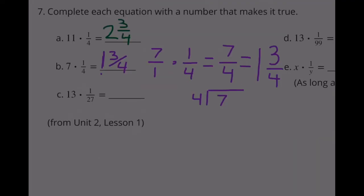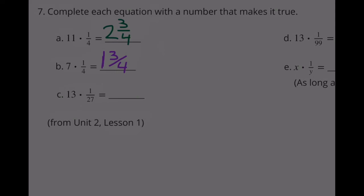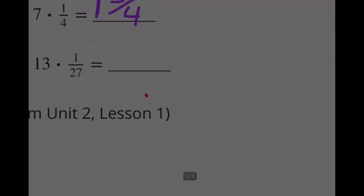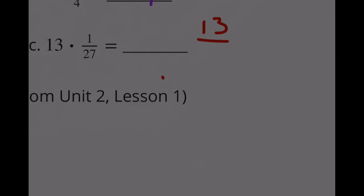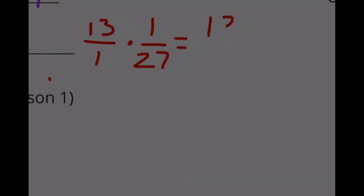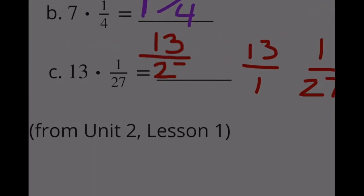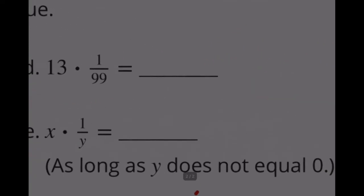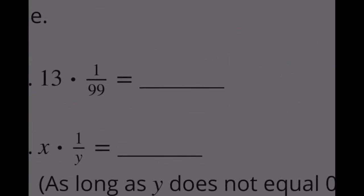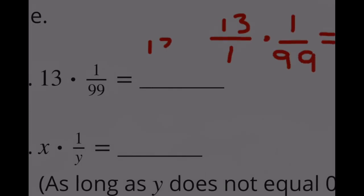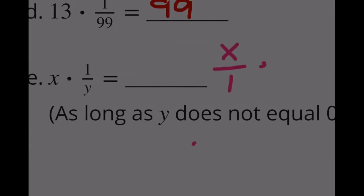Part C: 13 times one twenty-seventh equals 13 over 27. Part D: 13 times 1 over 99 equals 13 over 99.